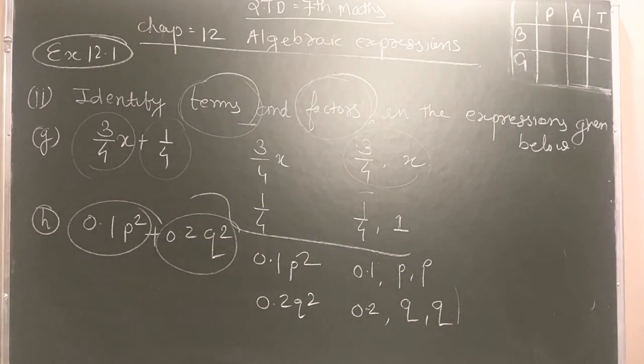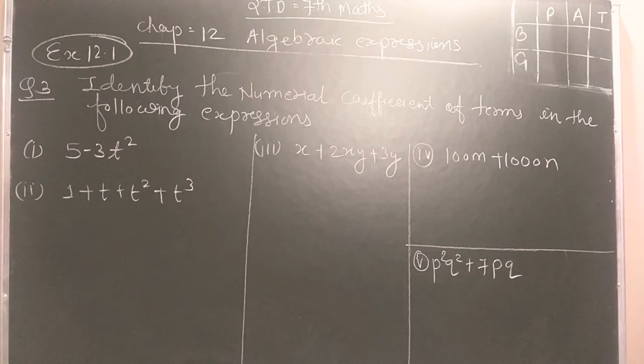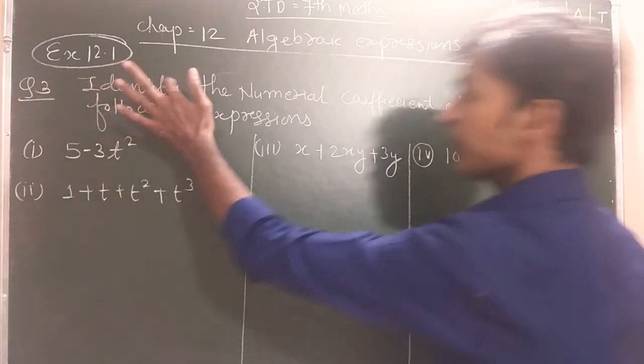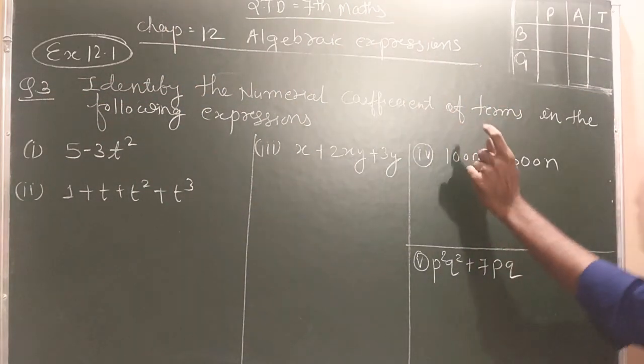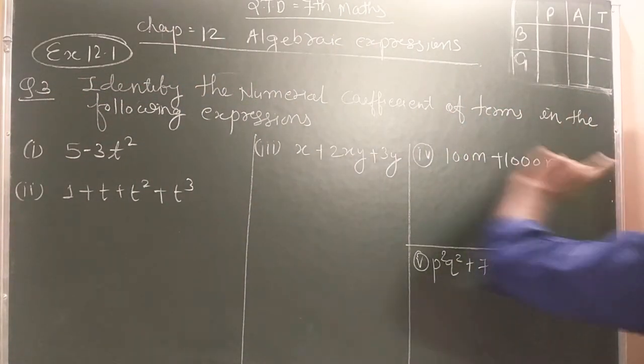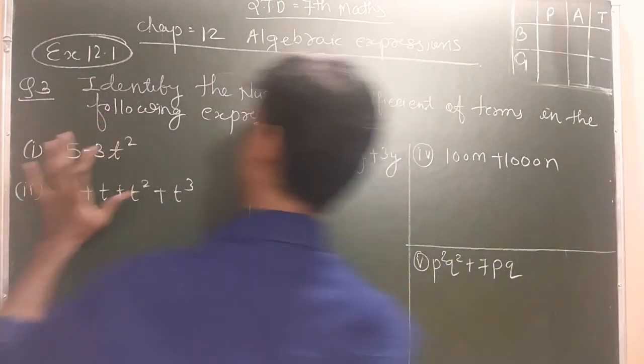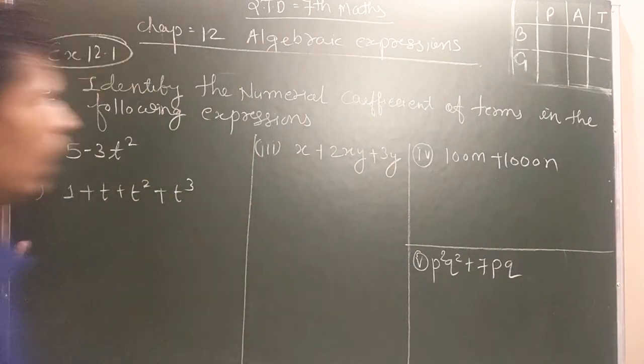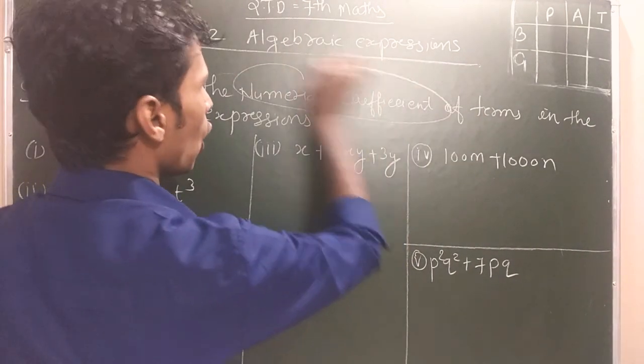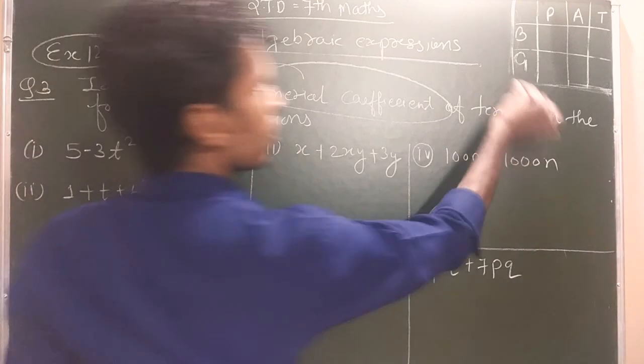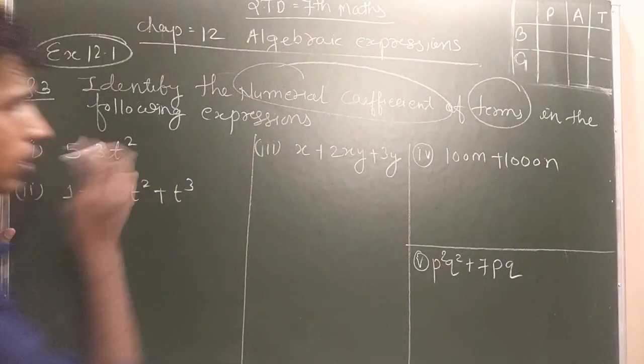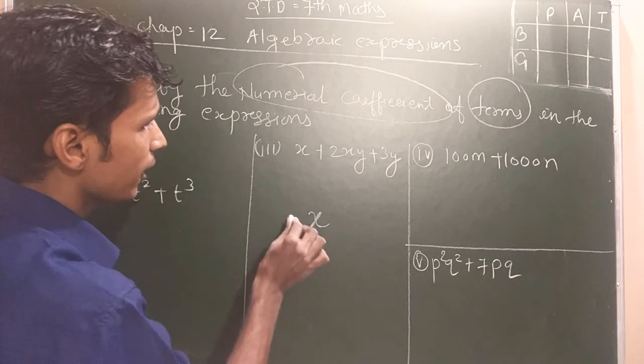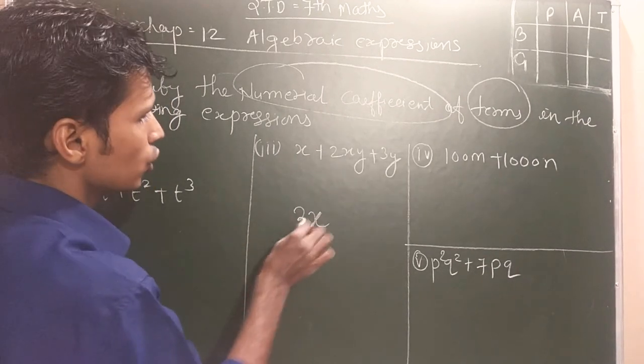Now student, question number 3: identify the numerical coefficient of terms in the following expression. Student, here I have taken sum and we have to find out numerical coefficient of terms. So numerical coefficient of terms, if I am writing X, X ke aage jo number ho.